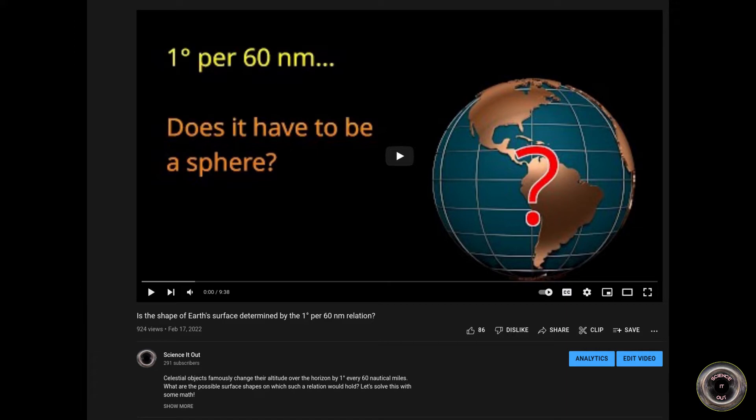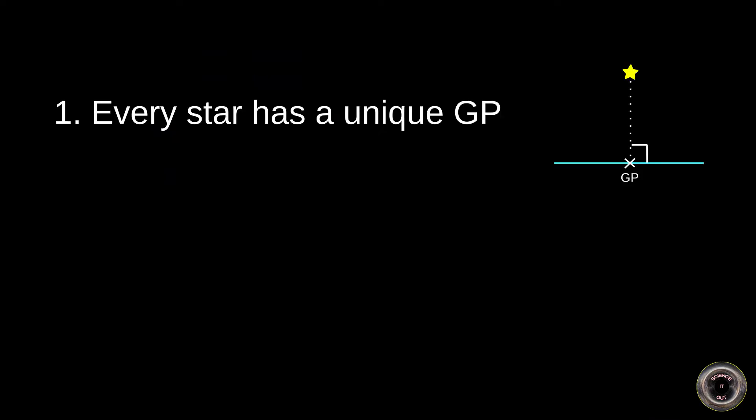We'll start with two assumptions. One, every star has a unique corresponding geographical position, or GP, on Earth. The GP is the point where the star is in the zenith, that is directly overhead. Or, in other words, its elevation angle is 90 degrees.